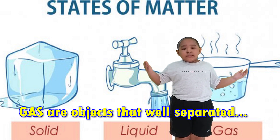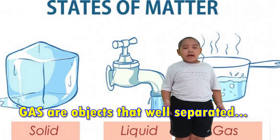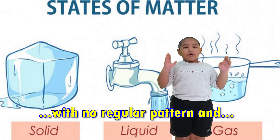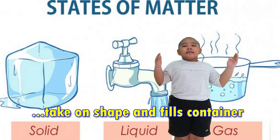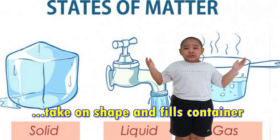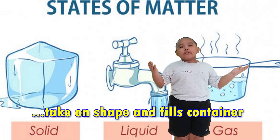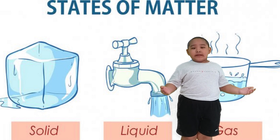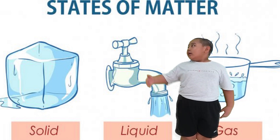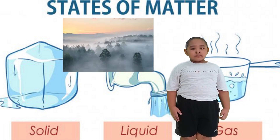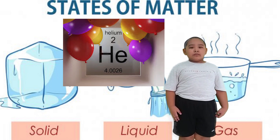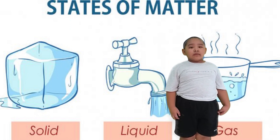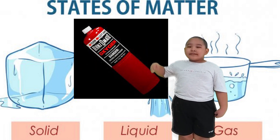Number three, gas are objects that are well separated with no regular pattern and take on the shape and fill the container. Samples of gas are fog, helium, wind, and oxygen.